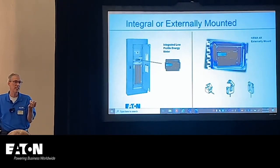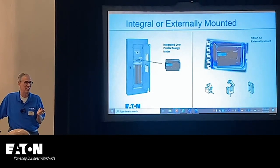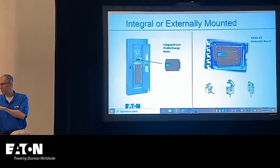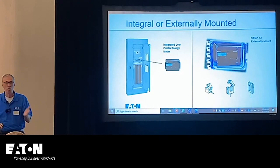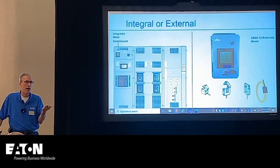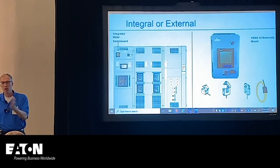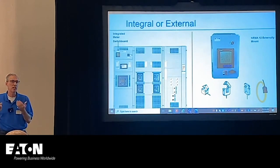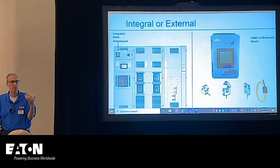When mounting meters into panels or gear, there are two approaches. They can come factory-installed with the CT wiring and orientation already correct. Or they can be installed externally in the field — mounting a box next to the panel, running CTs over to it — but there's a chance the CTs could be wired incorrectly or oriented wrong. For a switchboard monitoring the main power into a facility, we can have a meter pre-wired inside with correct CT orientation, or an enclosed version in a NEMA 12 box, pre-wired internally, where you still need to run CTs and get orientation correct.